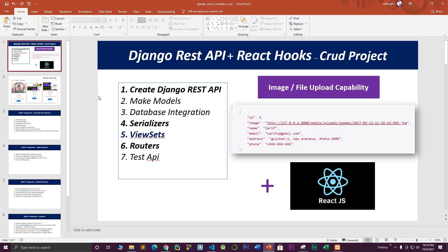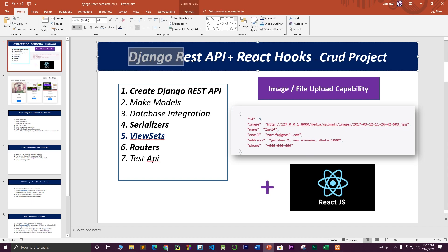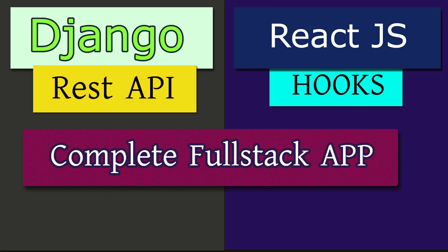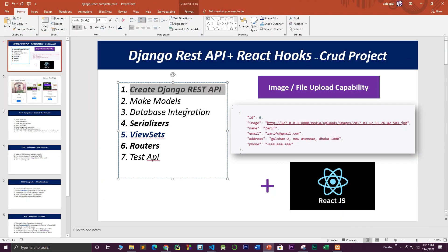Welcome to my channel. This is a new series where I'm going to build an amazing application using React with the latest React hooks, and connect it with a Django REST API. This full-stack web application will cover creating a Django REST API, building models, database integration using MySQL, and working with serializers to serialize your model data in Django.